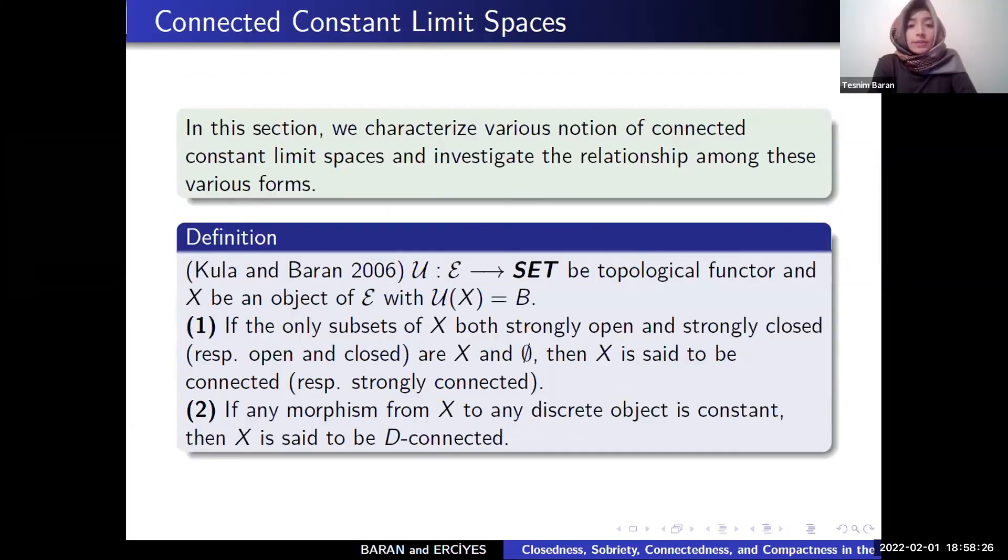Connected constant limit space. U is a topological functor. If the only subsets of both strongly open and strongly closed are X and empty, then X is set to be connected. It's both open and closed, X is set to be strongly connected. If any morphism from X to any discrete object is constant, then it's said to be D-connected.